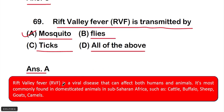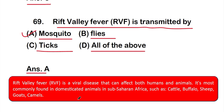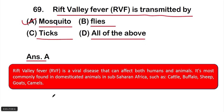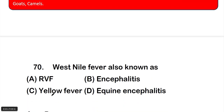Rift Valley Fever is a viral disease that can affect both humans and animals. It is most commonly found in domesticated animals in sub-Saharan Africa, such as cattle, buffalo, sheep, goats, and camels.